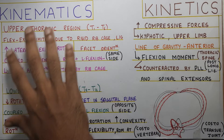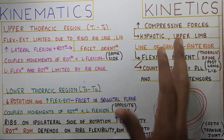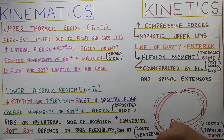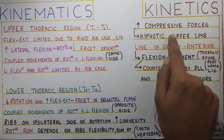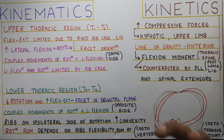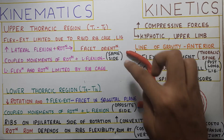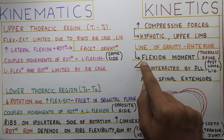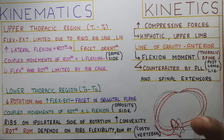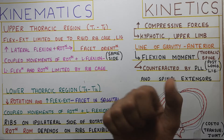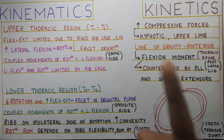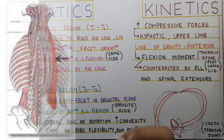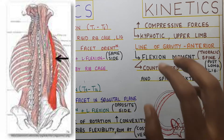That covers the kinematics. Moving to kinetics: the compressive forces at the thoracic joints are very high because of the kyphotic curve at the thoracic region, and the added weight of the upper limbs. Also, with a kyphotic curve, the line of gravity passes anteriorly to the vertebrae, which increases the flexion moment at the thoracic spine. This excessive flexion moment is countered by the posterior longitudinal ligament — which is a very thick ligament in the thoracic region — and the spinal extensors.